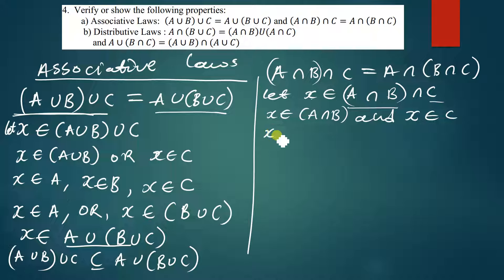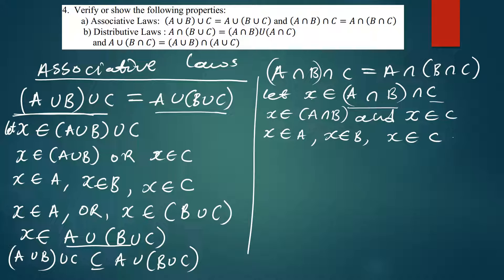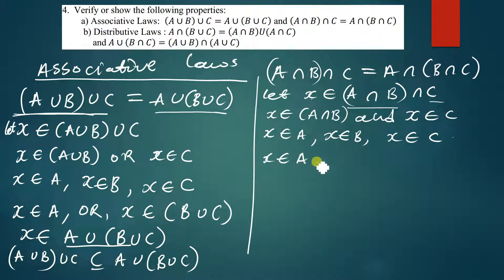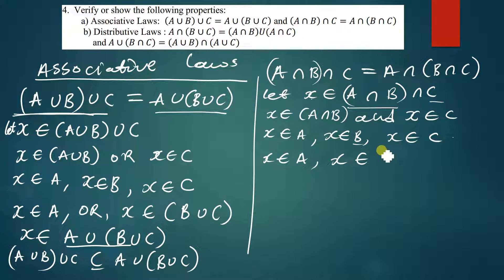Since x is in (A intersection B) intersection C, it is a member of both A intersection B and C. Because of the intersection, x is also a member of both A and B. So we can say x is a member of A, x is a member of B, and x is also a member of C.